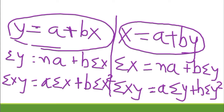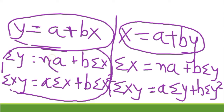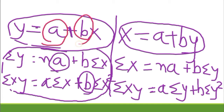By solving these normal equations we get the values of a and b, which will be the best values of a and b. After substituting the values of a and b into y = a + bx, or into x = a + by, we'll get the best fitting straight line.